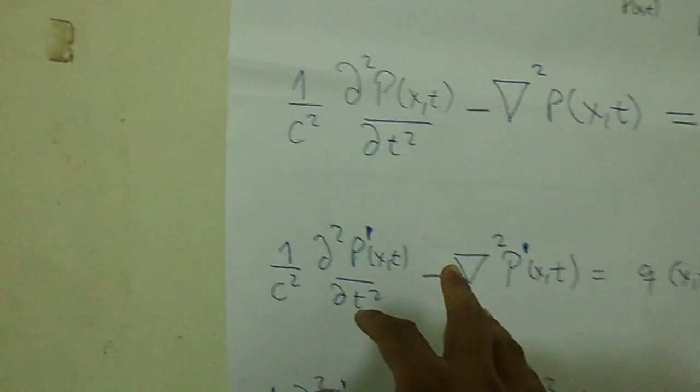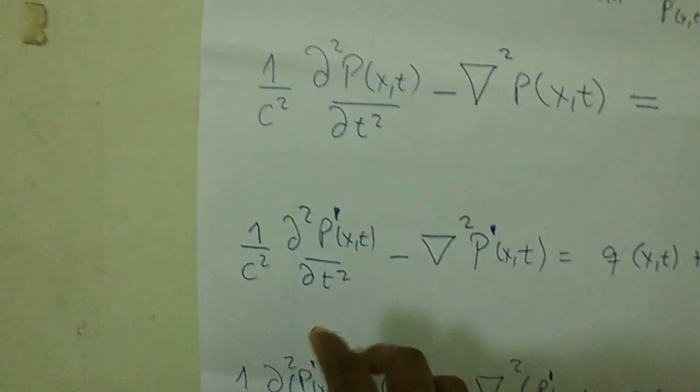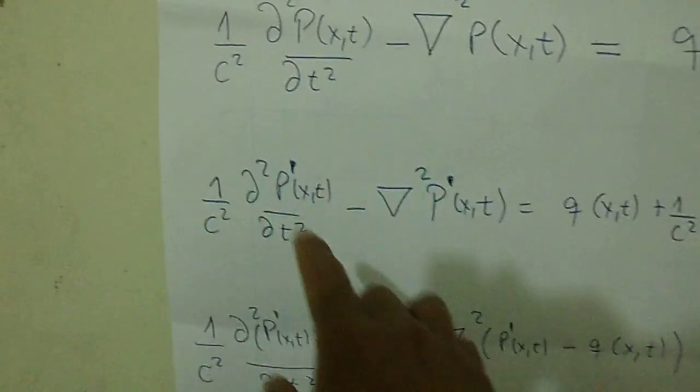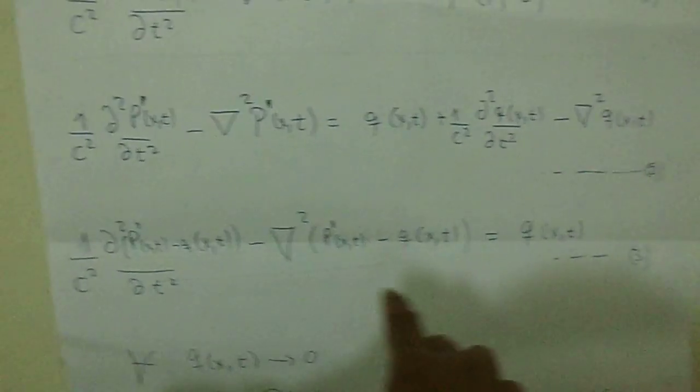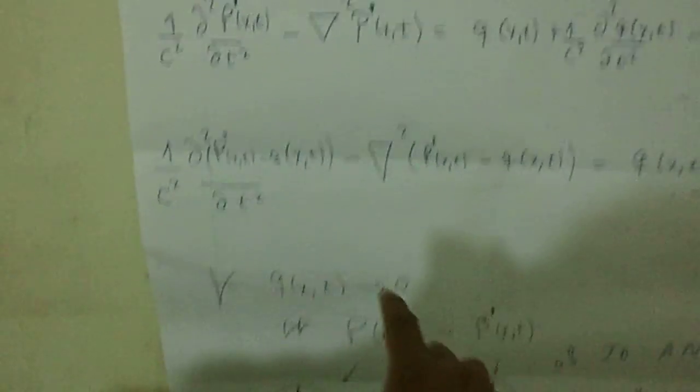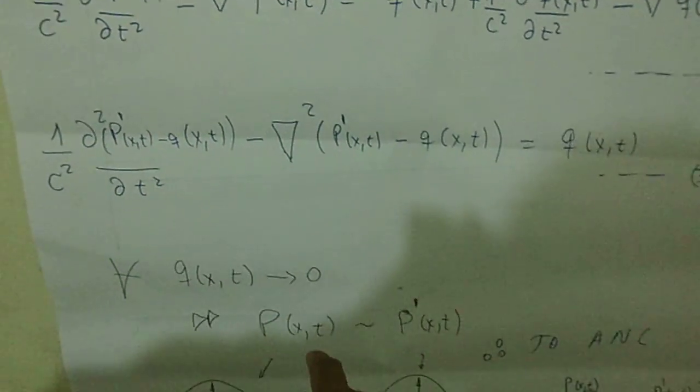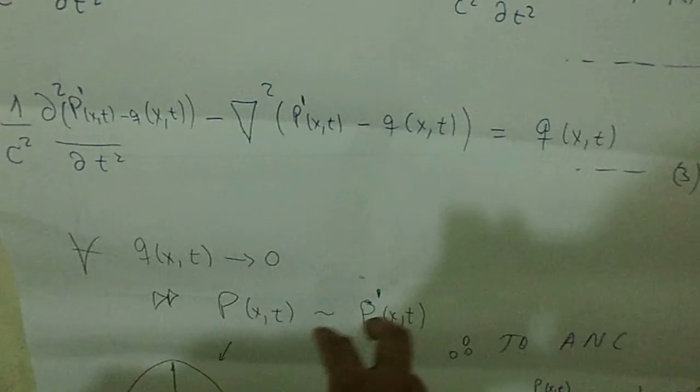The second zone source produces a second pressure field named P prime, where C is the speed of the sound wave. If we reorder these equations, we can summarize in equation number three. What happens if in equation number three the zone source is near null? Then the pressure field P is equivalent to the pressure field P prime.